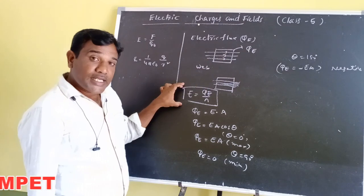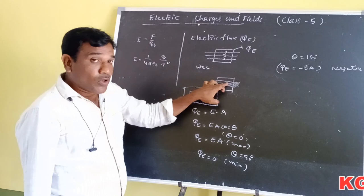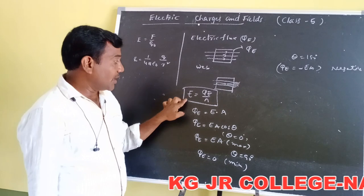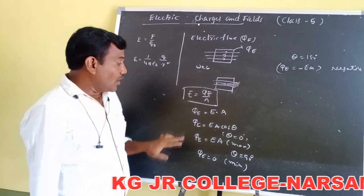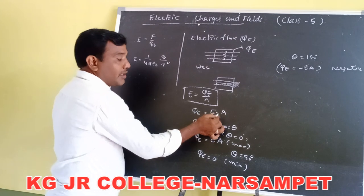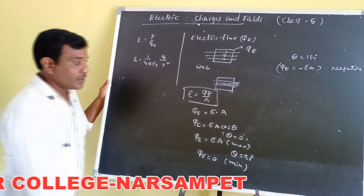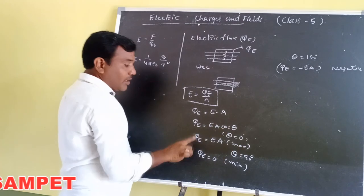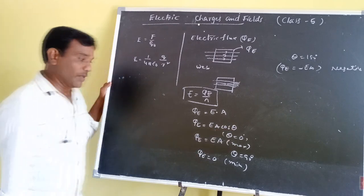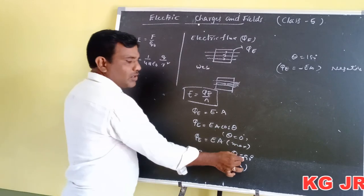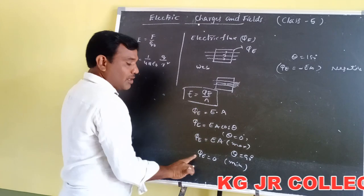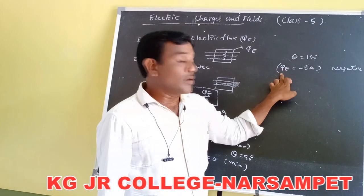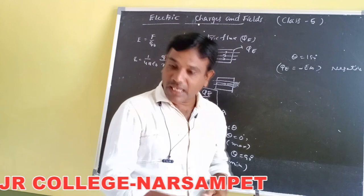The electric flux passing through a unit area is called the intensity of electric field, so E = φ/A. Therefore φ = E·A (dot product, i.e., scalar product), which gives φ = EA cosθ. When θ = 0°, cos 0 = 1, φ = EA (maximum). When θ = 90°, cos 90 = 0, φ = 0 (minimum). When θ = 180°, φ = −EA (negative).